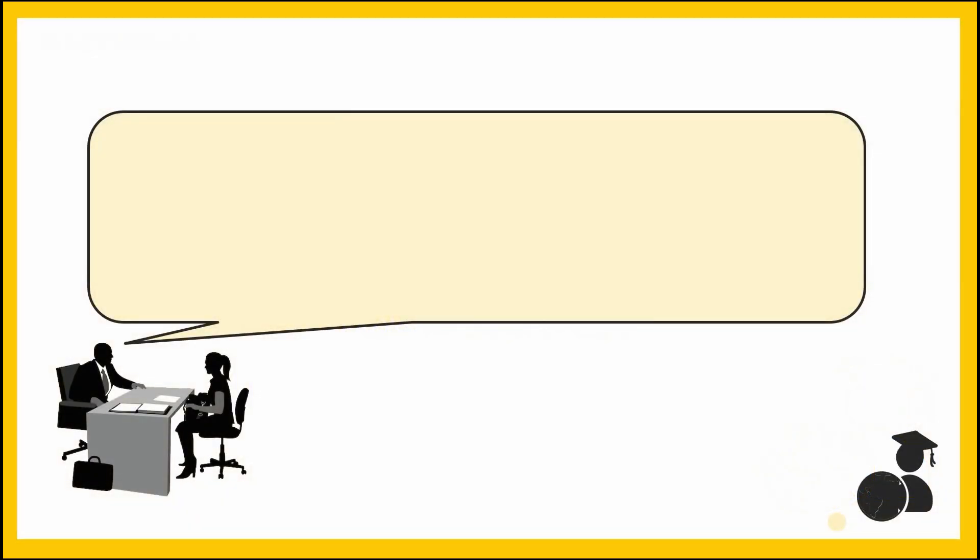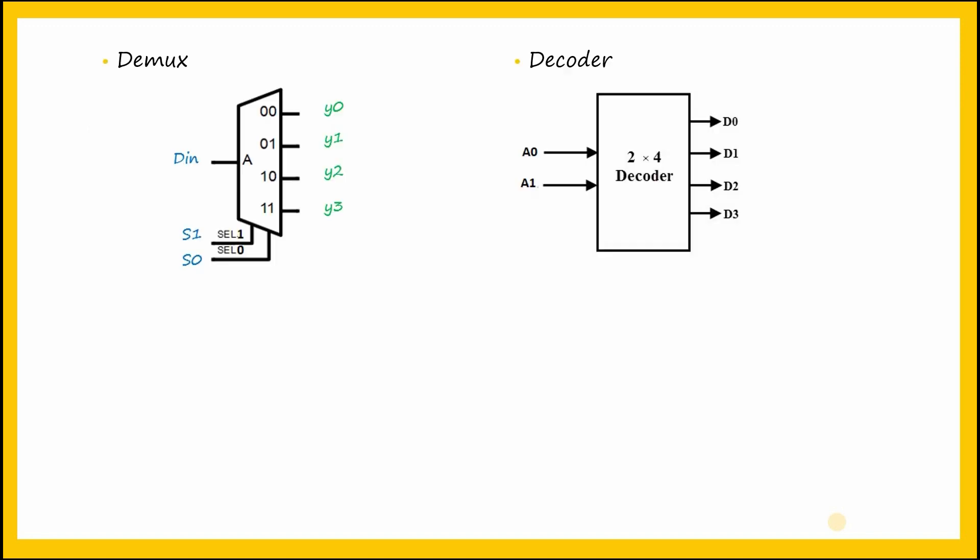These two combinational circuits, the decoder and the demultiplexer, seem very similar. Let's understand their differences. Let's take the example of a decoder and a demultiplexer with the same number of output terminals: a 1-to-4 demultiplexer with 4 output terminals and a 2-to-4 decoder also with 4 output terminals.